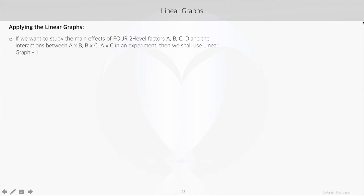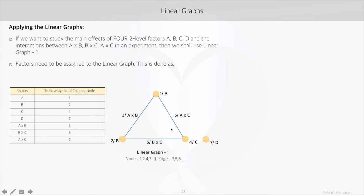Now, if we take a specific design case, where we have to study the main effects of four two-level factors. Let's say the factors are A, B, C and D and the interactions between A, B and B, C and A, C in an experiment. So, in that case, we will use linear graph 1, this one.